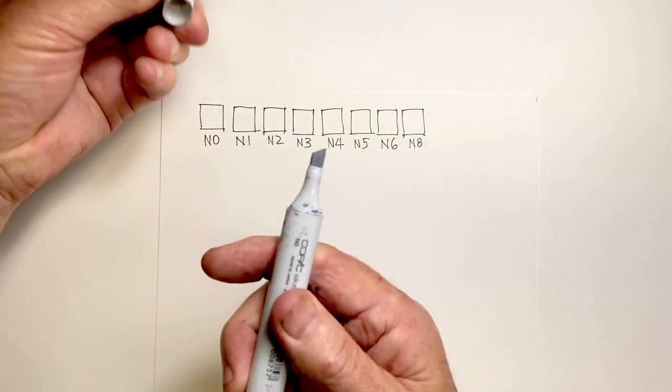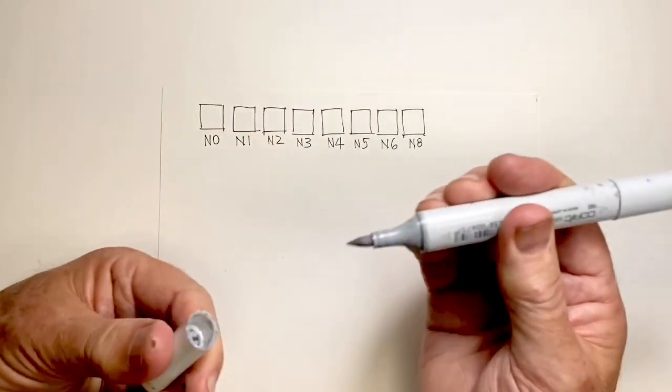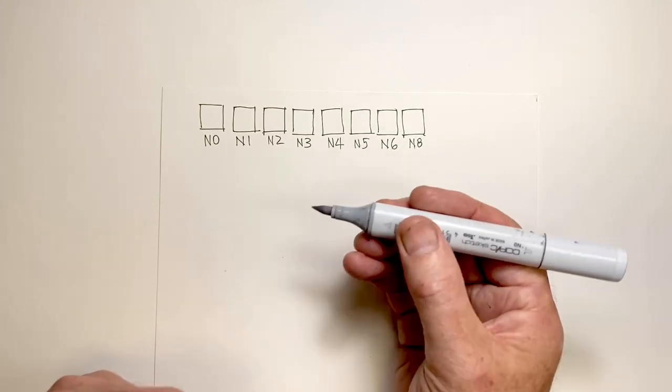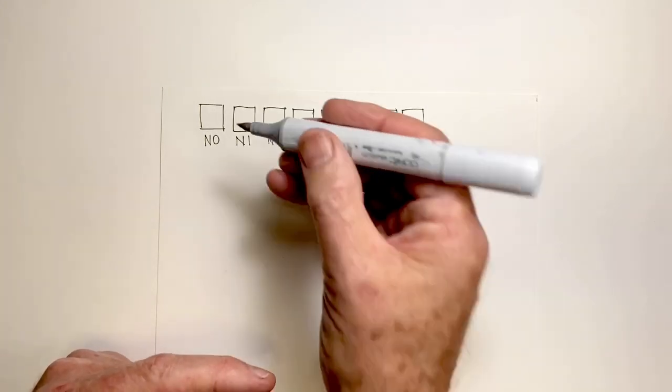Now Copic markers come with a chisel end as well as a brush end. I only ever use the brush end in applying tone to my drawings, so I make sure I use the brush end here.